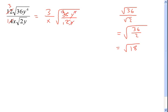So this becomes 3 over x, and then inside my root I've got 18 y to the 3rd. Now, 18—what does that become? 9 times 2, so just 3 root 2.